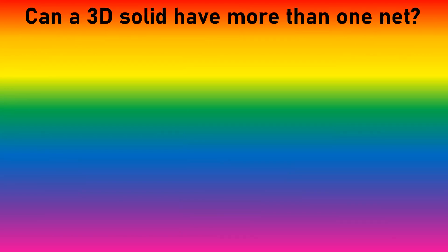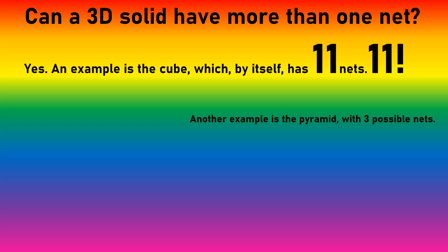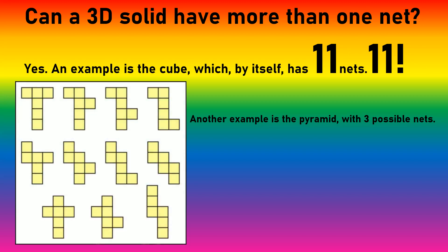So, can a 3D solid have more than one net? Yes! An example is the cube, which by itself has 11 nets — 11! Another example is the pyramid, with 3 possible nets.